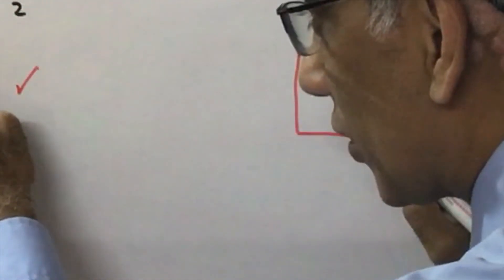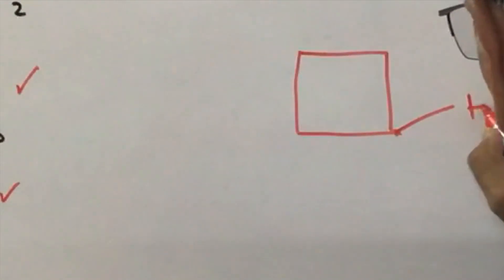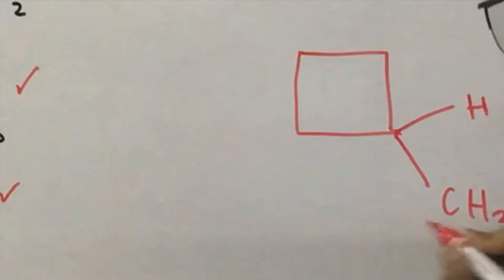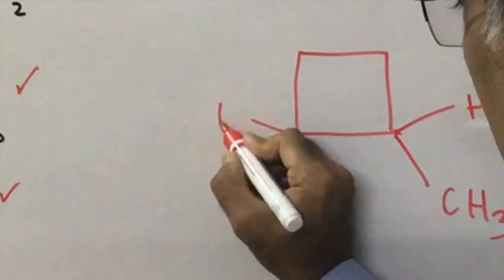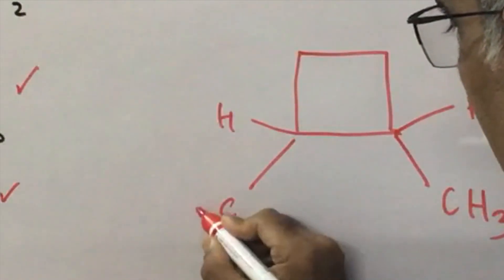And in this cyclic structure, a hydrogen is understood here, and then you have a CH3. A hydrogen is understood here, and then you have a CH3.